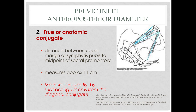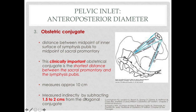The true or anatomic conjugate is the distance between the upper margin of the symphysis pubis up to the sacral promontory, measuring approximately 11 centimeters. It is derived from the diagonal conjugate by subtracting 1.2 centimeters. The obstetric conjugate runs from the midpoint of the symphysis pubis to the sacral promontory — it is the shortest AP diameter, approximately 10 centimeters — and is estimated by subtracting 1.5 to 2 centimeters from the diagonal conjugate.